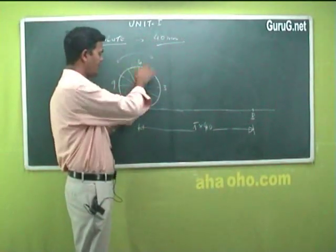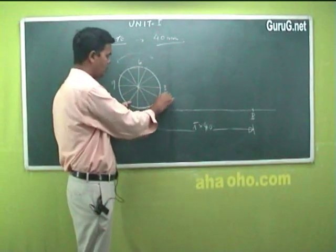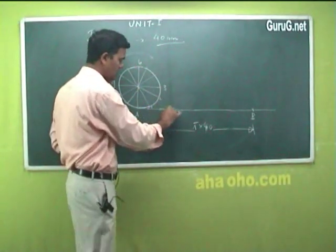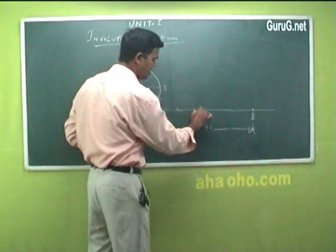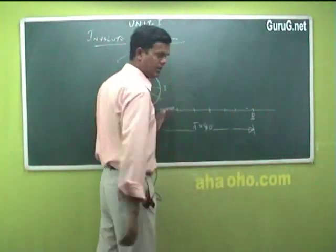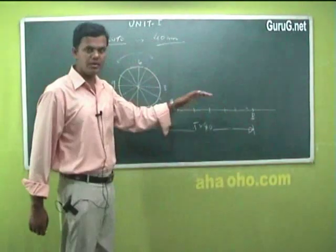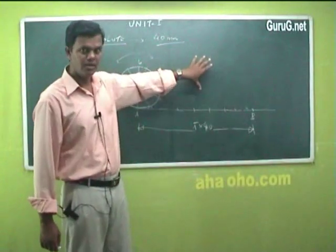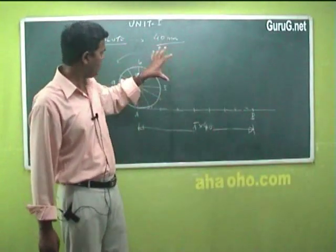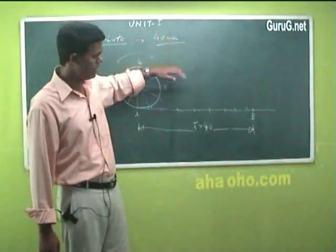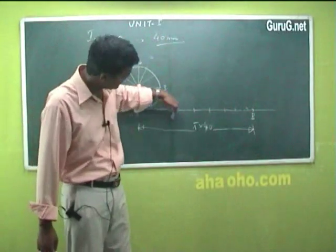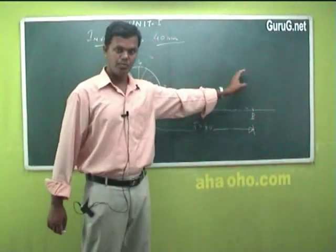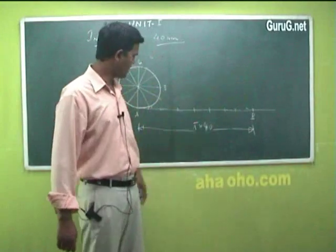Because we have 12 divisions on the circle — 1, 2, 3, etc. up to 12 — we have to divide this baseline into the same equal number of divisions. I am not actually drawing exact 12 equal divisions here because I am drawing on a board, but if you take an exact value of 40 millimetre diameter, obviously you will get a proper diagram.